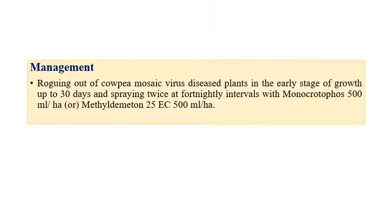Coming to management aspects, roguing out of cowpea mosaic virus infected plants in the earlier stage of growth up to 30 days is recommended. Since the viral disease is transmitted by vectors, spraying at twice-fortnightly intervals of Monocrotophos at the rate of 500 ml per hectare or Methyl demeton 25% EC at the rate of 500 ml per hectare can be recommended.